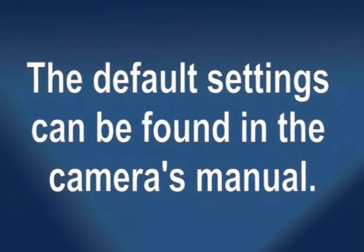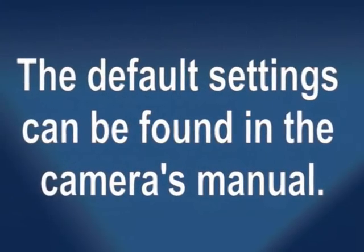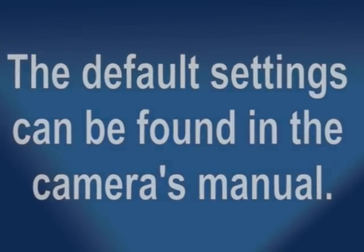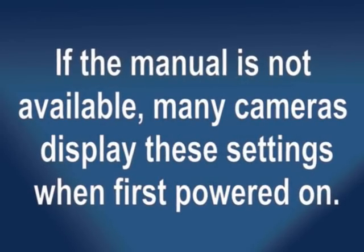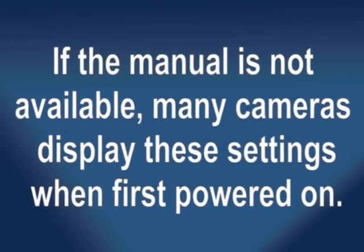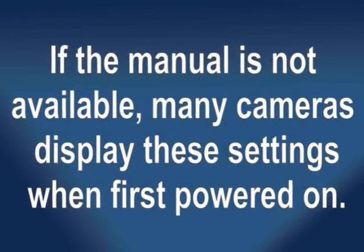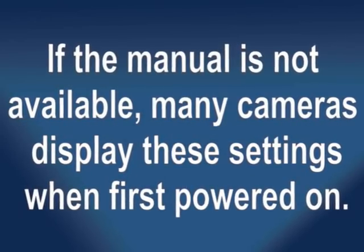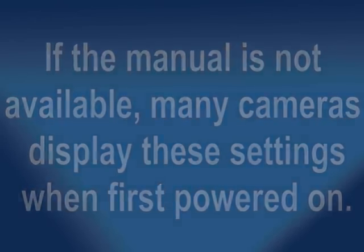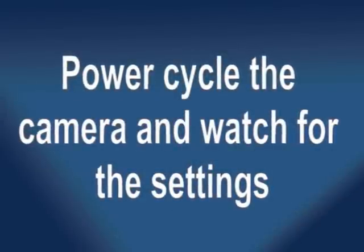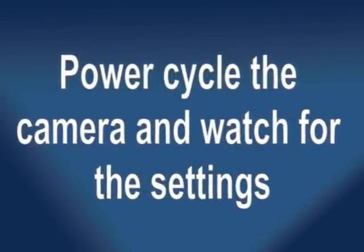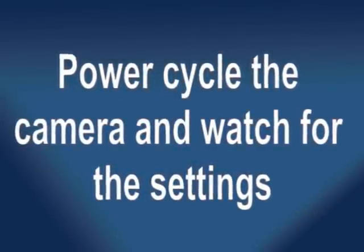The default settings can be found in the camera's manual. If the manual is not available, many cameras display these settings when they are first powered on. Power cycle the camera and watch for the settings to display over the picture.